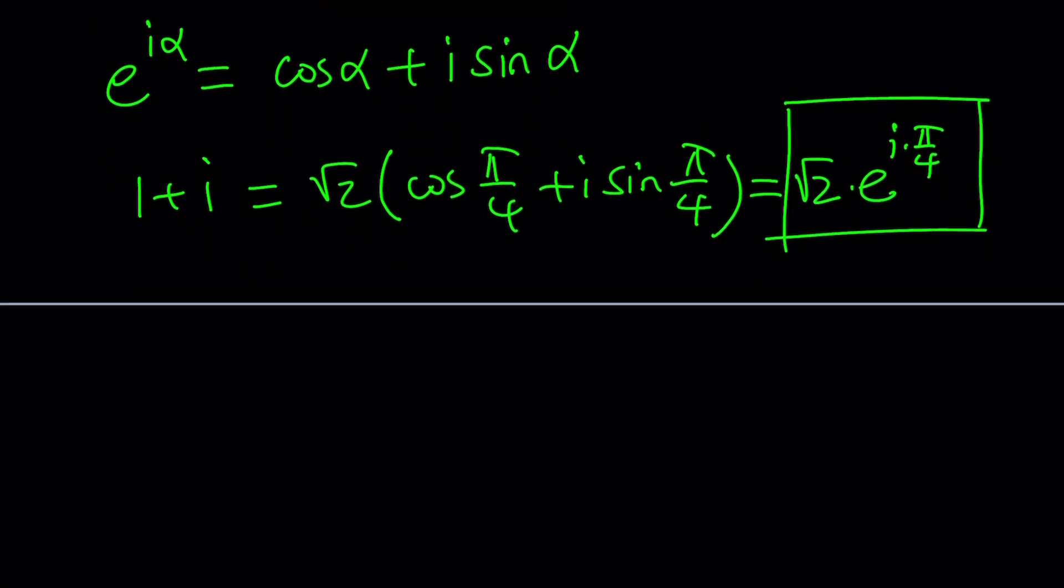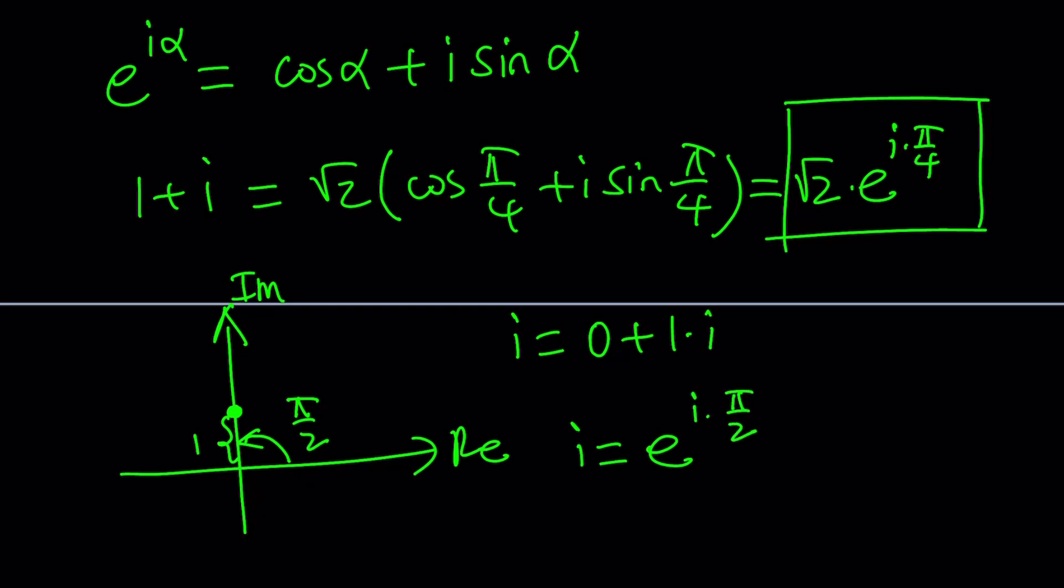Let me start by writing i as a complex number in polar form. i can be written as 0 plus 1i. So it basically appears as 0,1 on the coordinate system. This is going to be the imaginary axis, and this is going to be my real axis. So its angle is going to be pi over 2. And its length is 1, its modulus or radius. So i can be written as 1 times e to the power i times pi over 2.